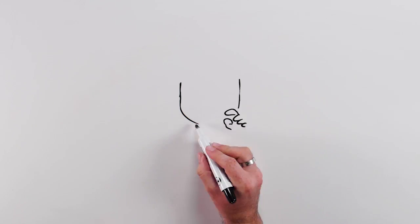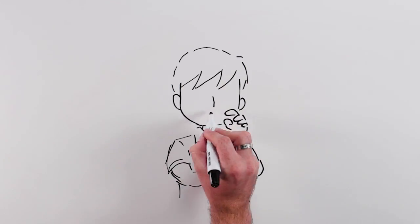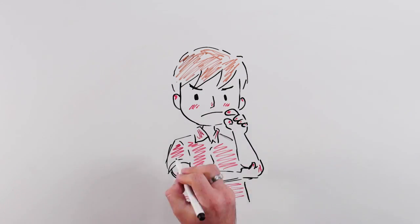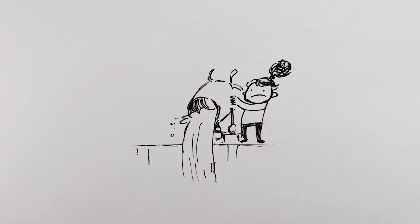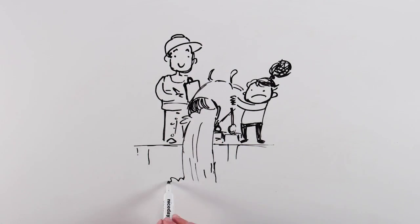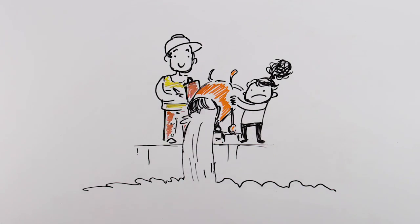So why should we teach computing as a compulsory subject to every child from primary school onwards? At school we try to teach children something about technologies and skills which are of direct and immediate practical use, but we also teach them about foundational subject disciplines.